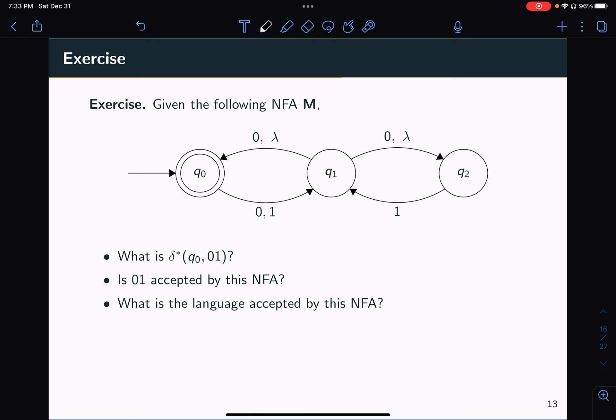And the first thing that we want to determine is for a particular string, what are the states that the NFA reaches when reading that string starting from Q0. And so that can be asked in a very compact form using the extended transition function of the NFA.